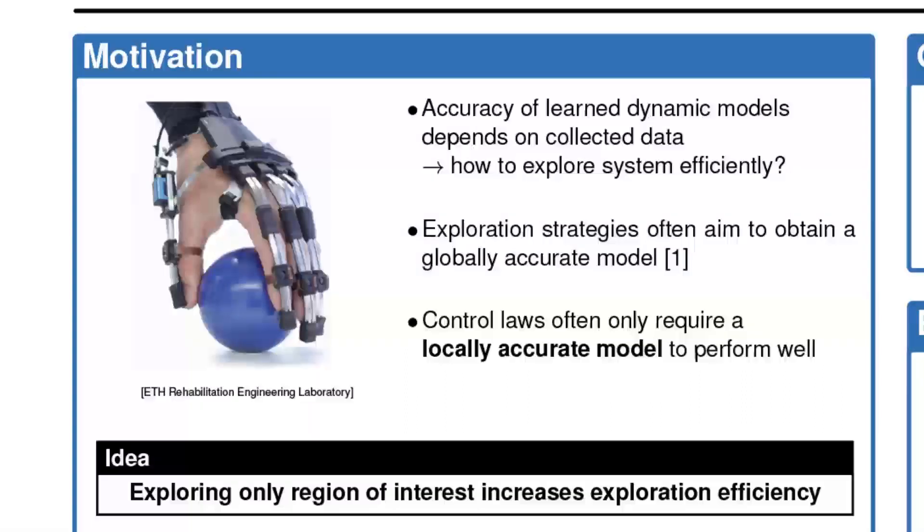Learning models for control is increasingly promising for settings where system complexity is high or prior information is scarce. When using a learned model for control, it is vital that the model yields accurate predictions. Hence, appropriate exploration strategies are required. Many exploration strategies explore the state space by steering the system to regions of high uncertainty, aiming to obtain a globally accurate model.